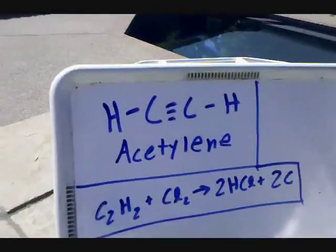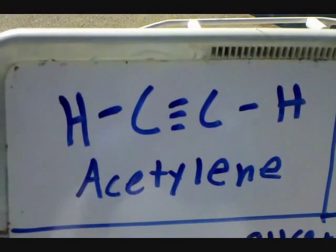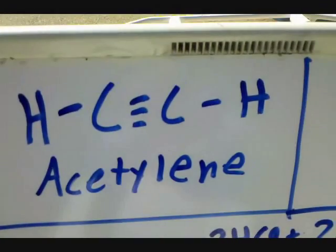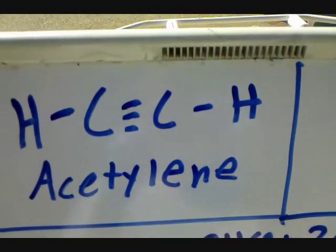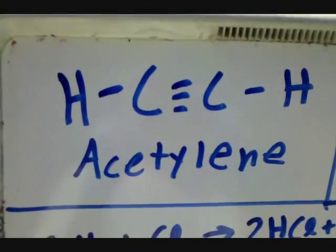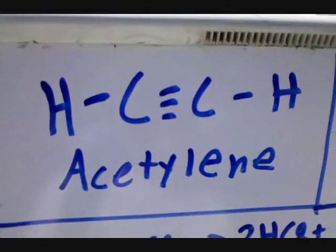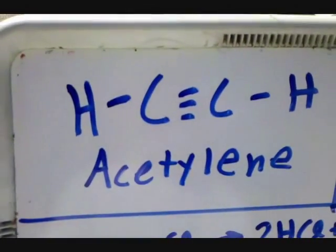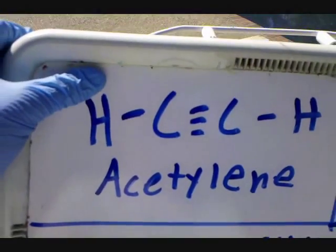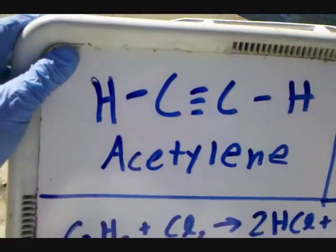Acetylene gas is the molecule seen here. It's a hydrogen bonded to a carbon, triple bonded to another carbon bonded to a hydrogen. It's used in welding torches.